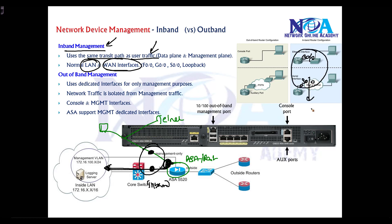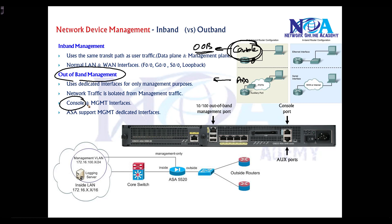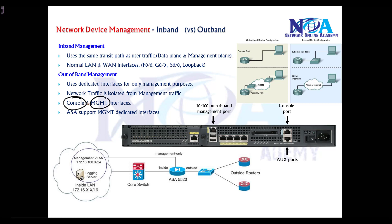If you are using two separate interfaces, that is out-of-band management. The simple example is the console port, which is a dedicated out-of-band management interface. Using the console port or auxiliary port, we can only do management — we cannot use that interface to forward any data plane traffic. So normal network traffic is completely isolated from the management traffic, and console and auxiliary ports fall under this category.